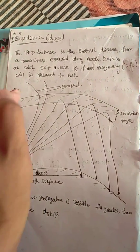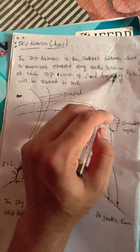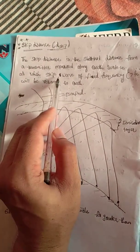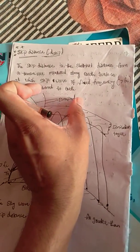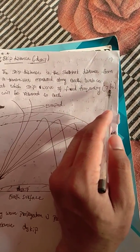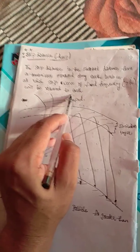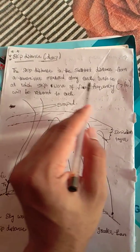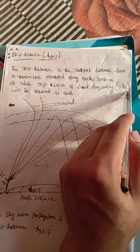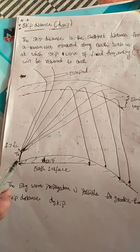Today we are going to discuss about a topic called skip distance. The skip distance is the shortest distance from the transmitter, measured along the earth's surface, at which a skip wave of fixed frequency f — where f is greater than fc, the critical frequency — will be returned to the earth.